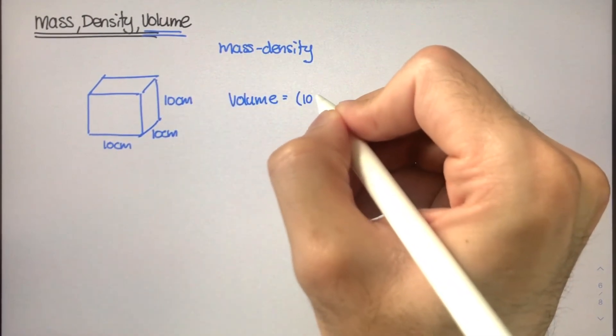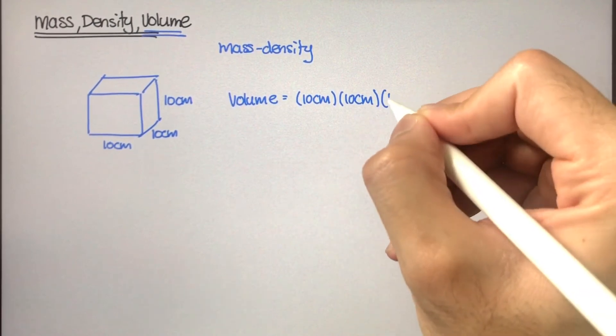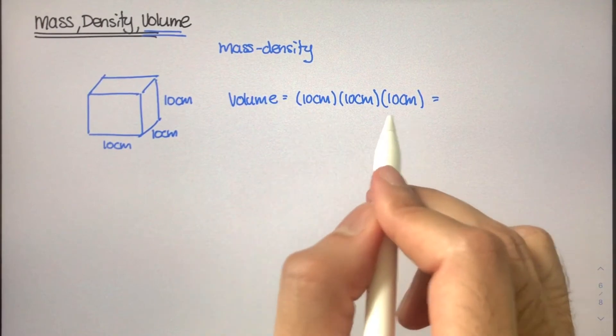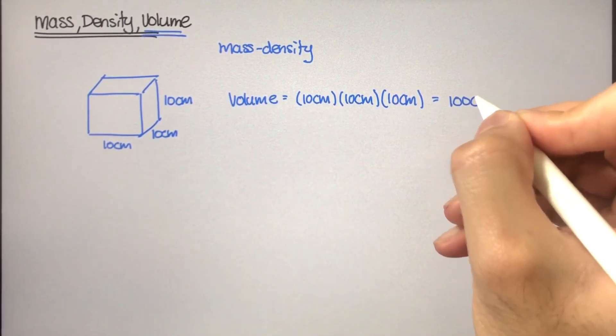So the volume of this box would really just be the width times its depth times its height. So it would be 10 centimeters times 10 centimeters times 10 centimeters. Pretty easy calculation: 10 times 10 times 10 is 1000.